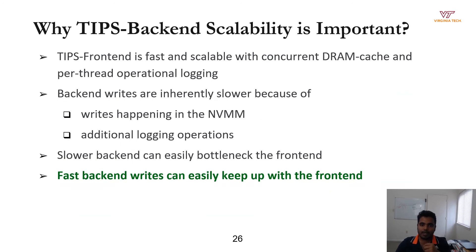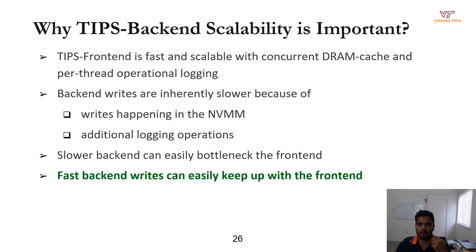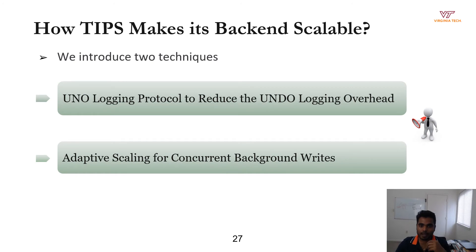The TIPS front-end with its concurrent DRAM cache and per-thread operation logging is extremely fast compared to the backend. Backend writes to the plugin index are inherently slower because all writes happen on NVMM, and additional undo logging can make it much worse. Moreover, there can be high-latency structural modification operations such as a tree split or rotation for a B+ tree or RB tree. A slower backend can easily bottleneck the fast front-end, as the space in the operation log is very limited. To make backend writes faster, we introduce two techniques: the UNO logging protocol and adaptive scaling for concurrent background writes.